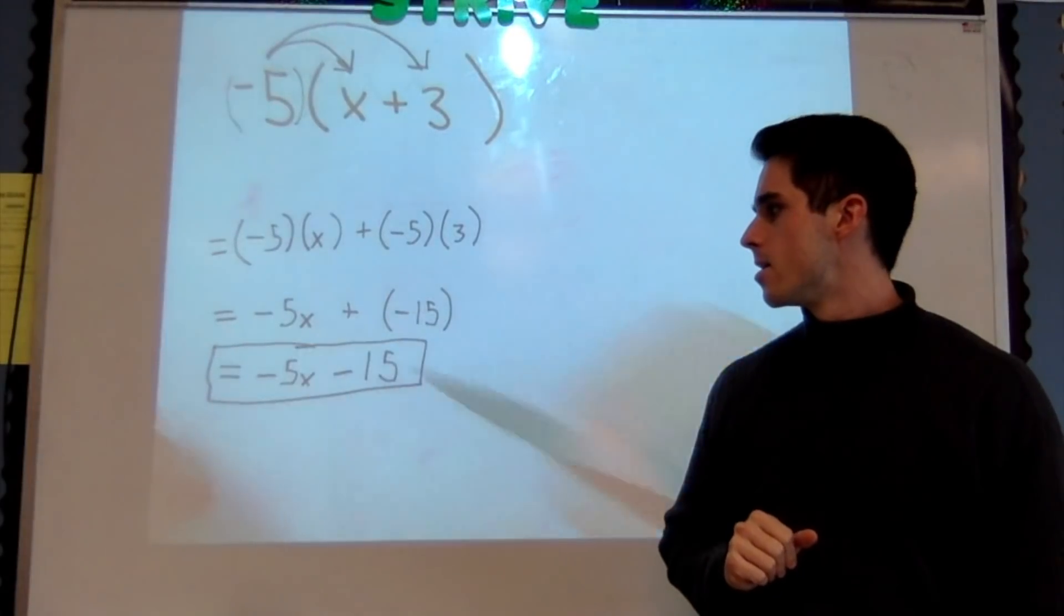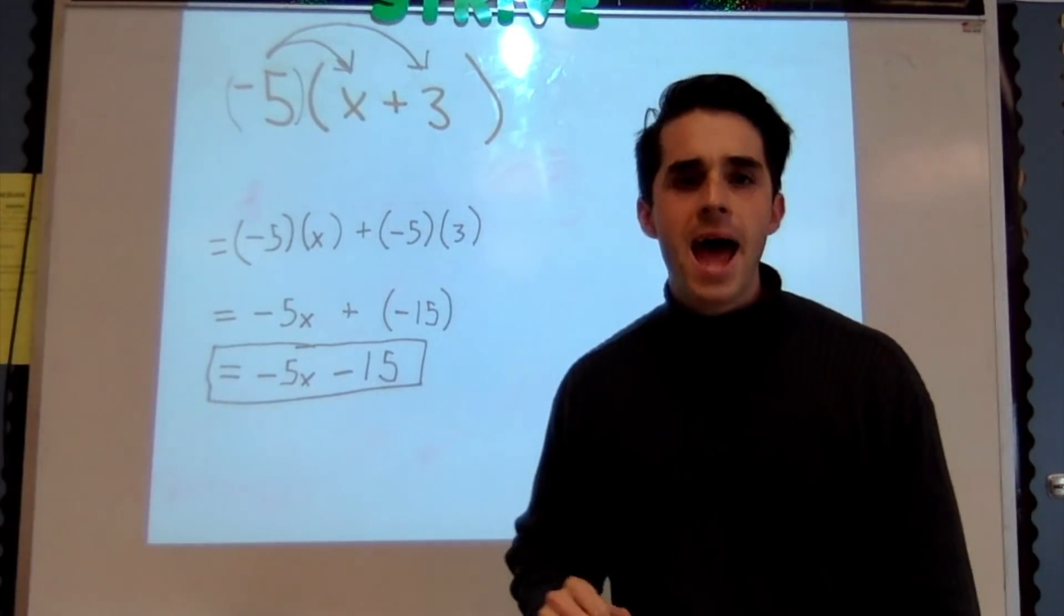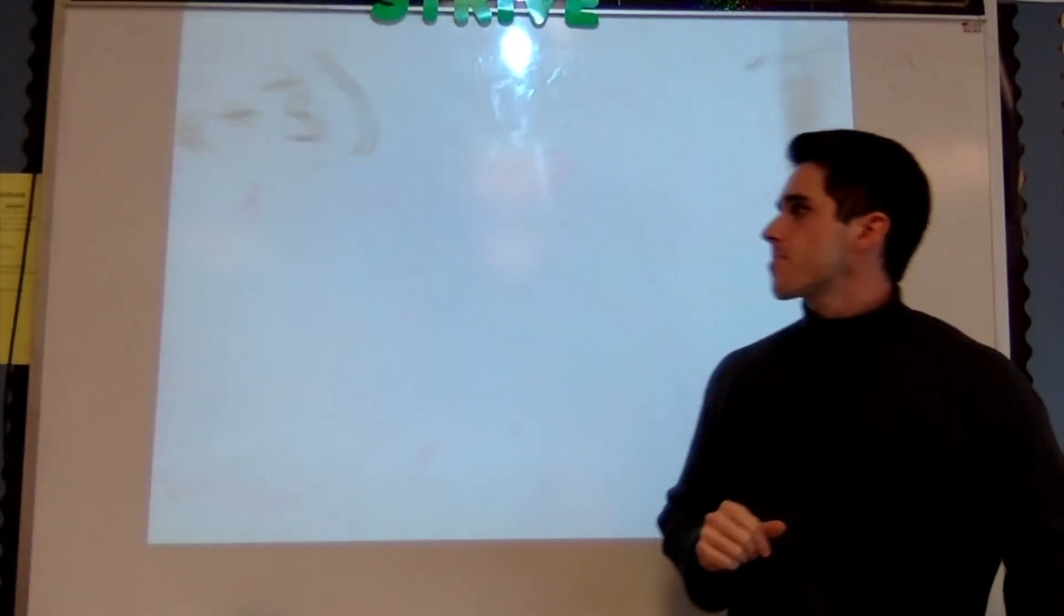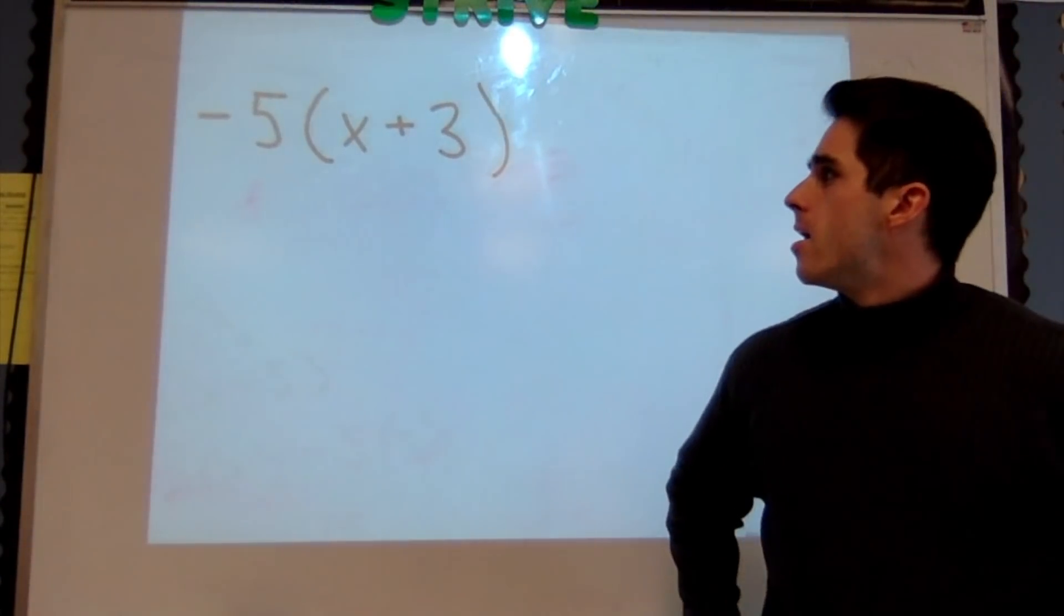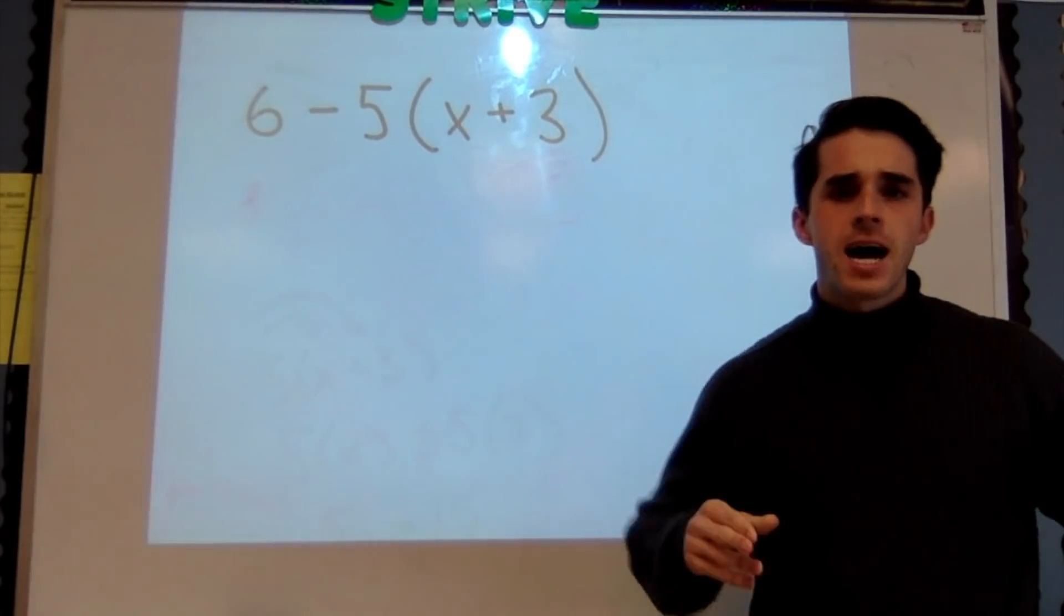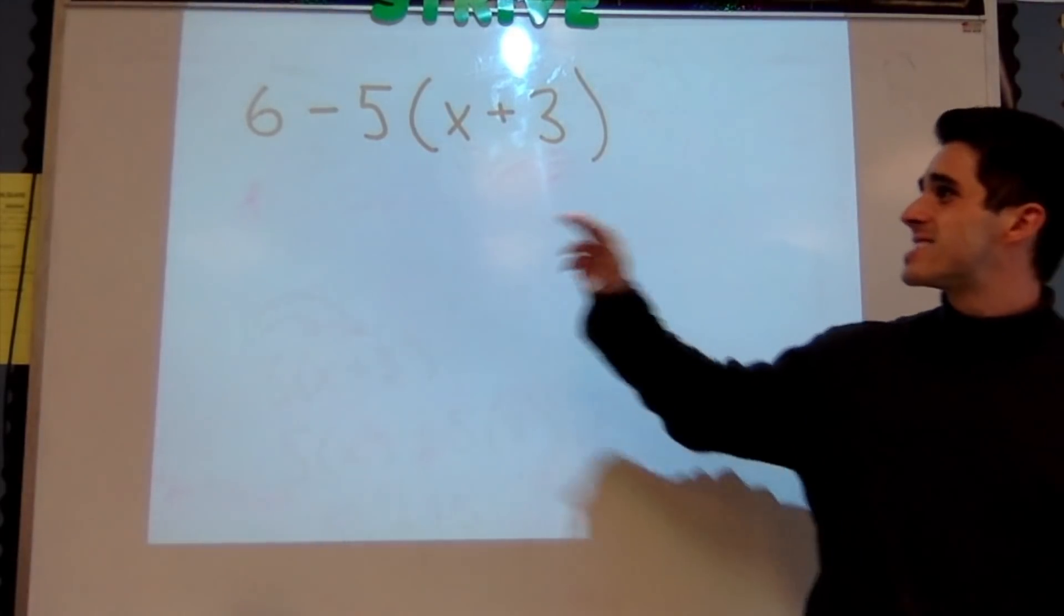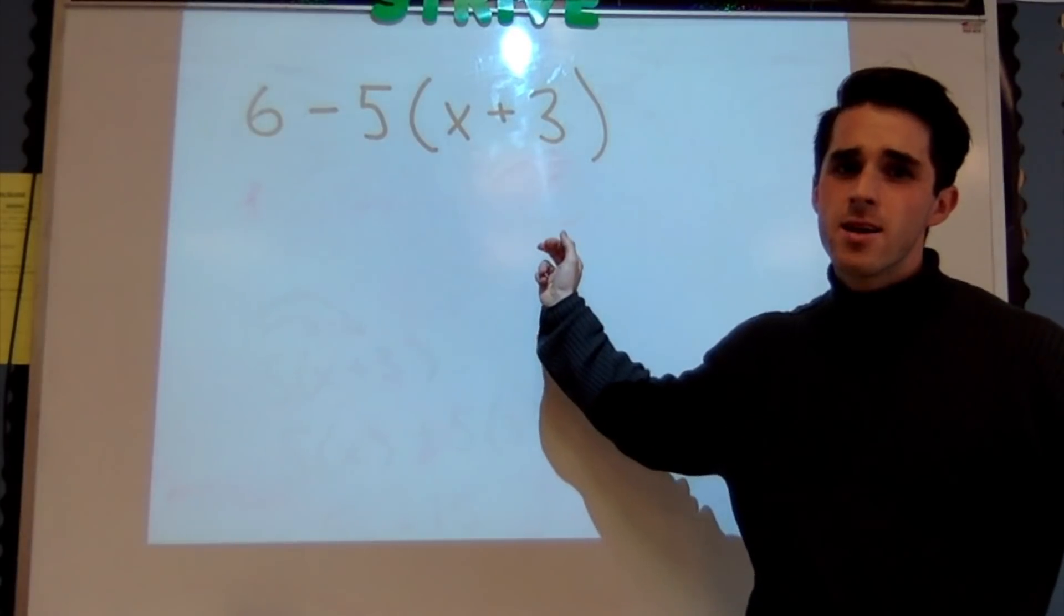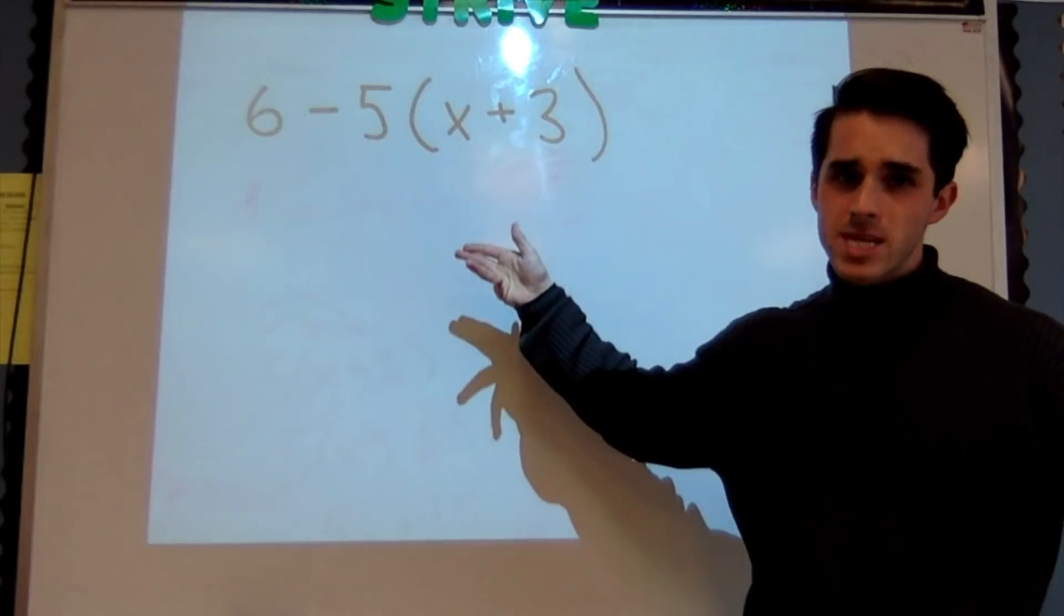All right, adding on one more layer of complexity. I got 6 - 5(x + 3). Not 6 - 5 times x + 3, not 6 - 5x + 3, but 6 - 5(x + 3).